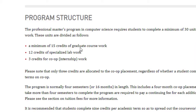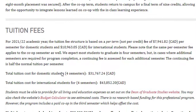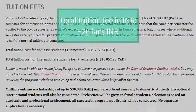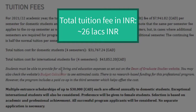If we talk about the tuition fees, for domestic students it is close to 8,000 Canadian dollars per semester, and for international students it is close to 11,000 Canadian dollars per semester. Totalling over four semesters, the international student tuition fee comes to 44,000 Canadian dollars, which corresponds to nearly 26 lakh Indian rupees.